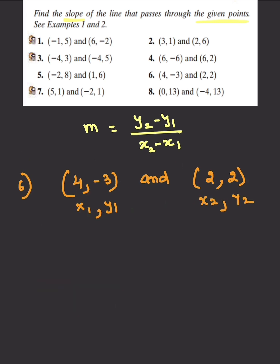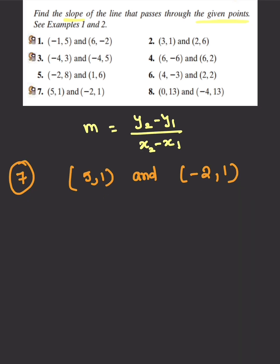So go ahead and try to make (4, -3) as x2, y2 and (2, 2) as x1, y1. Do the work and check your answer with my answer for number seven.